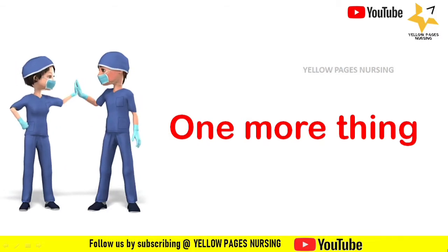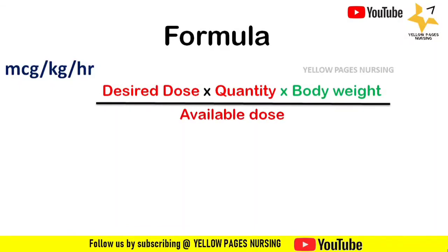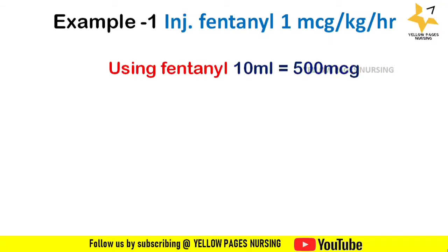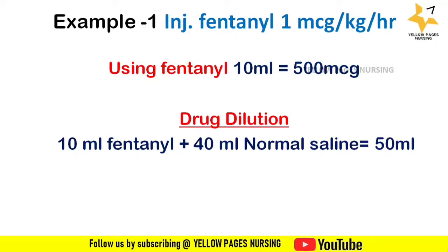The formula for this calculation is: desired dose × quantity × body weight ÷ available dose = ml per hour. Using the 10 ml fentanyl ampule, which contains 500 micrograms: dilute 10 ml of fentanyl with 40 ml of normal saline to give 50 ml total. The resulting strength is 10 micrograms per ml.